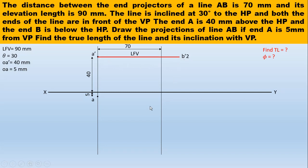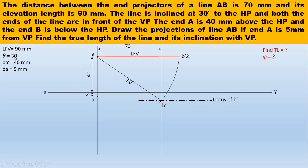That arc gives you point B-dash. Join A-dash B-dash — this is our front view. The intersection point gives you the locus of B-dash. Now true inclination with respect to HP is given as 30 degrees, so draw a line from point A-dash at an angle of 30 degrees. That will cut the locus of B-dash at B-dash-1. This is our true length. So front view is clear and true length is clear.